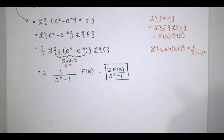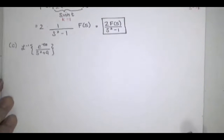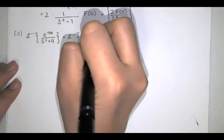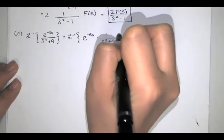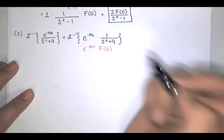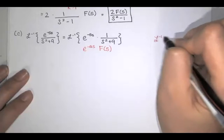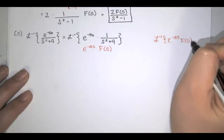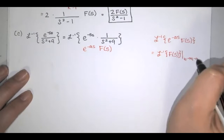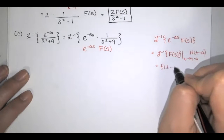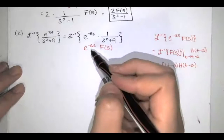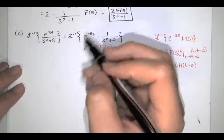That is the Laplace transform for part b. Now in part c, we have e to the negative a·s times a function of s. We think of this as the inverse transform of e to the negative a·s times F of s. We have a shifting theorem for this: the inverse transform of F of s gives f of t, but we replace all t's with t minus a and multiply by the Heaviside function at t minus a. By pattern matching, if this is e to the negative 5s, then a must be 5.